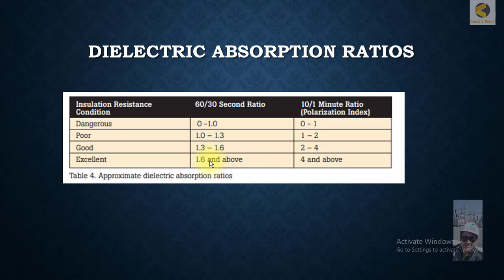For the polarization index, which is the 10 minute to 1 minute ratio, if the reading is more than 4, then it's excellent.